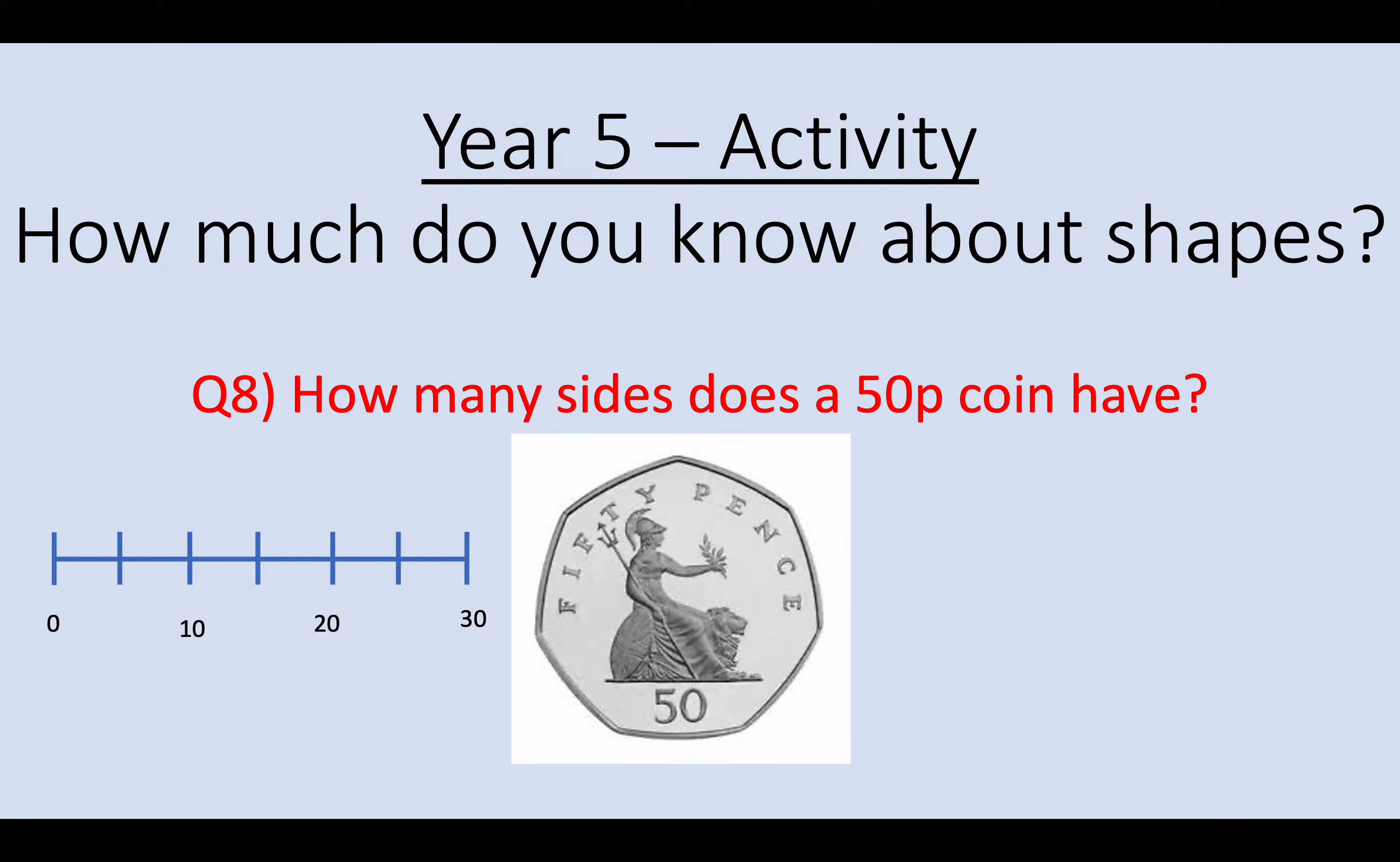Question 8. How many sides does a 50p coin have? A 50p has 7 sides. This is called a heptagon. Now that's a really tricky question. Not many people know that. But all you have to do is look at the picture in the question. So question 8, 7. There are 7 sides on a 50p coin.